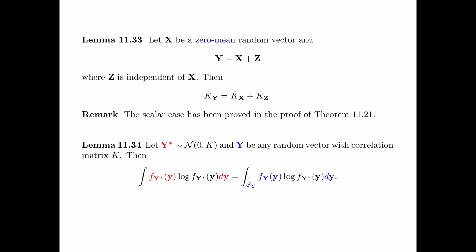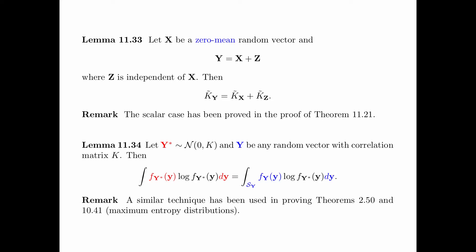Lemma 11.34 says the following: let Y star be a Gaussian vector with mean zero and covariance matrix K, and Y be any random vector with correlation matrix K. Now consider the integral of F_{Y star}(y) log F_{Y star}(y) dy. The lemma says that in this integral, F_{Y star}(y) dy can be replaced by F_Y(y) dy, where the integration is over the support of Y. A similar technique has been used in proving Theorems 2.50 and 10.41 when we discussed maximum entropy distributions, and this lemma is best understood in that context.